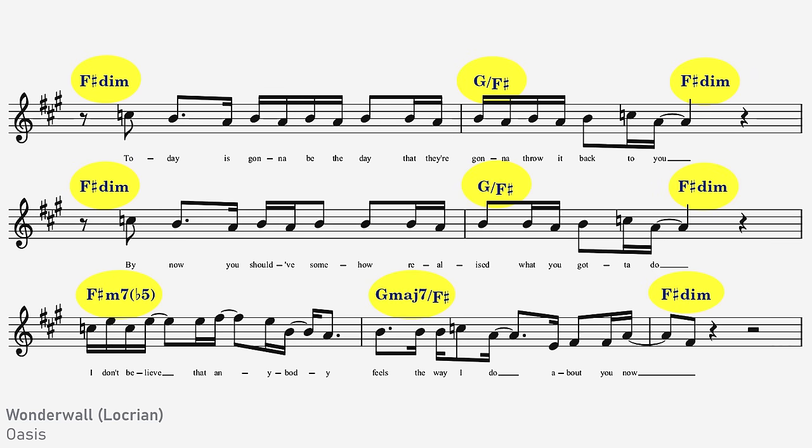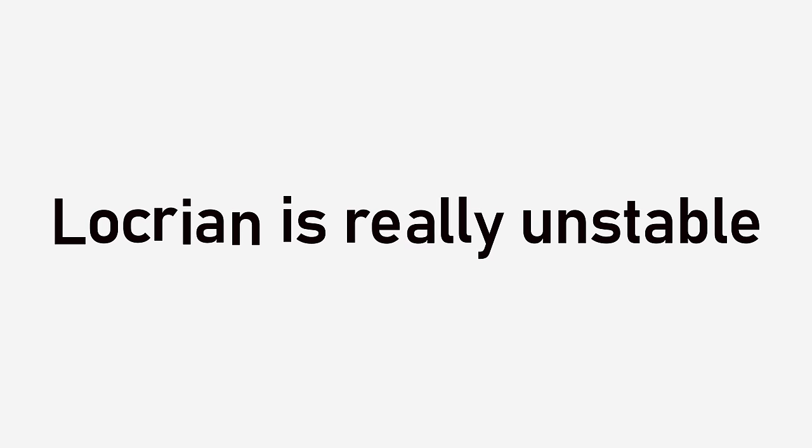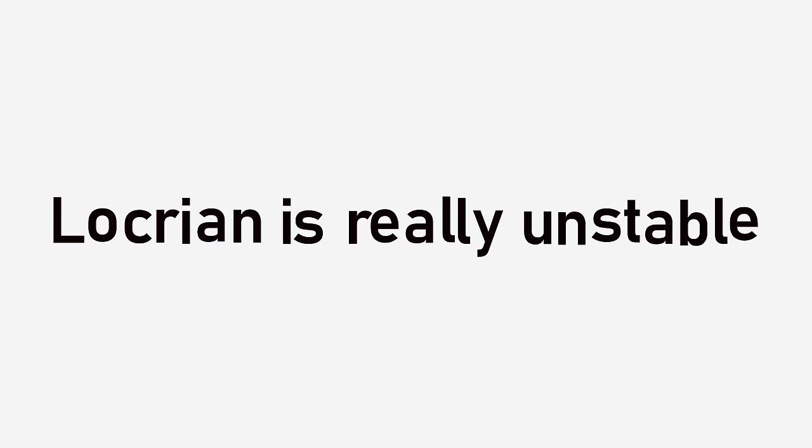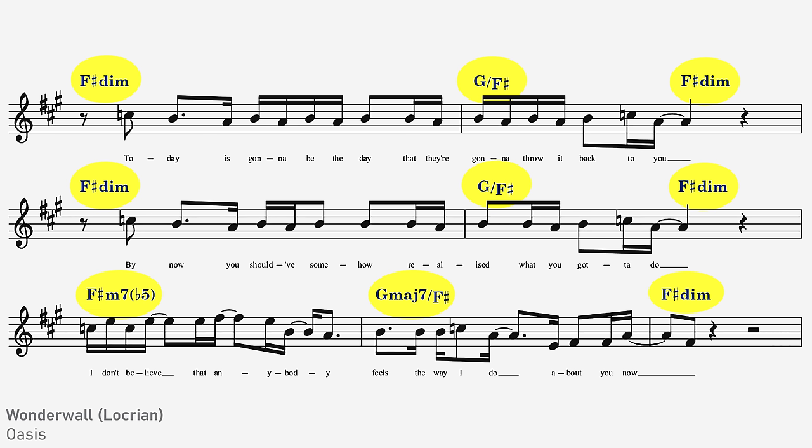You also may notice that, like I did with the Lydian scale, I've made sure that every chord here has the tonic note of F-sharp as its lowest pitch underpinning the whole thing, because Locrian is really unstable. It really doesn't want to stay in Locrian. So a good trick to keep it locked in to that Locrian sound is to keep the tonic note droning underneath every chord at all times.